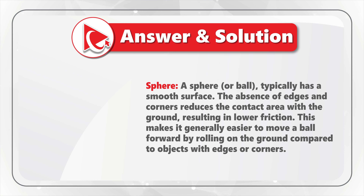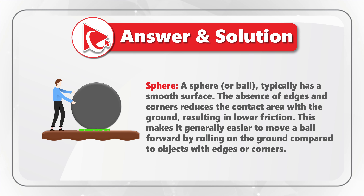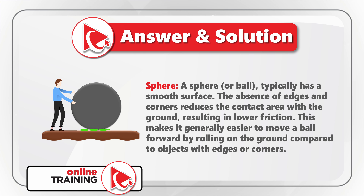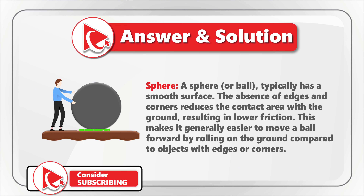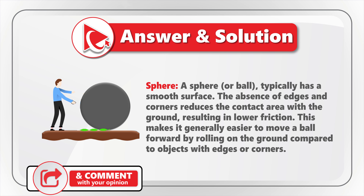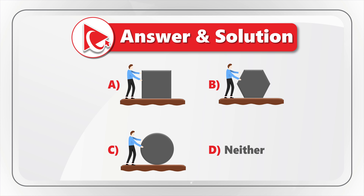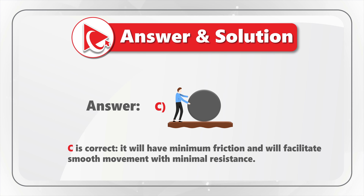Which brings us to Choice C — the sphere or ball, which typically has a smooth surface. The absence of edges and corners reduces the contact area with the ground, resulting in lower friction. This makes it easier to move the ball forward by rolling compared to objects with edges or corners. This is why Choice C is correct — it will have minimum friction and facilitate smooth movement with minimum resistance.